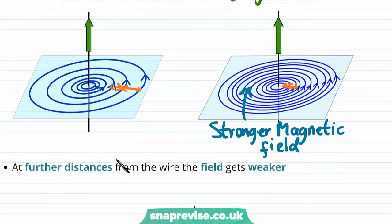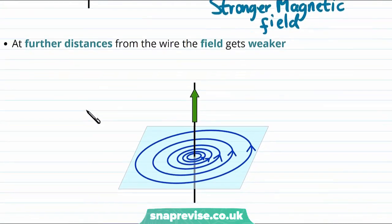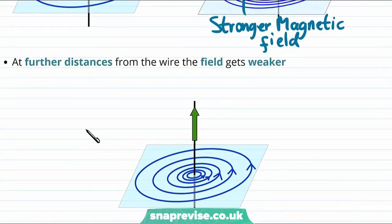So we know how the strength of the magnetic field varies with the current now. But how does the strength of the magnetic field vary with our distance from the wire? Well it turns out that at further distances from the wire the magnetic field gets weaker. And again we can see this in our picture where close to the wire the field lines are close together, and further away the field lines are further apart.